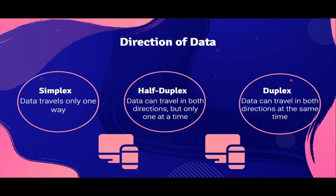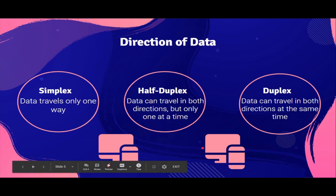Next, we have full duplex, or duplex. Duplex means data can travel in both directions at the same time, which means the first device can transmit data and the second device can transmit data simultaneously. When representing this in a diagram, you draw one line between both devices and put arrowheads on both sides. An example of duplex is our mobile phones.